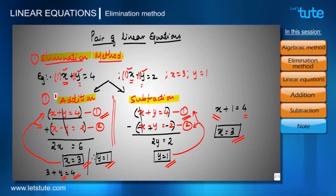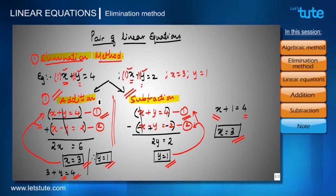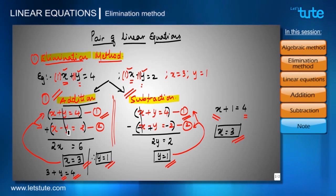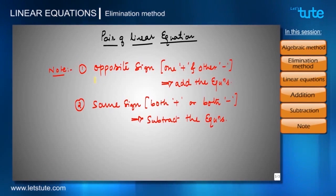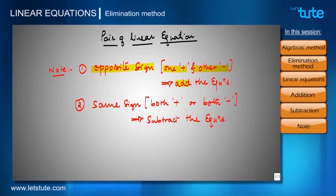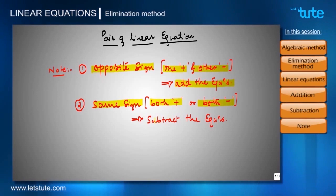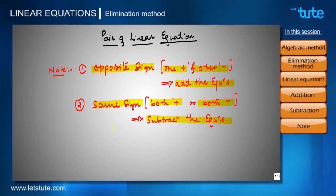From both methods — addition and subtraction — we got the same values: x equals 3 and y equals 1. Remember: use either addition or subtraction in one problem, not both. To decide which to use: if the terms you want to eliminate have opposite signs (one positive, one negative), add the equations. If they have the same sign (both positive or both negative), subtract the equations. Either way, you will get the same values for x and y.